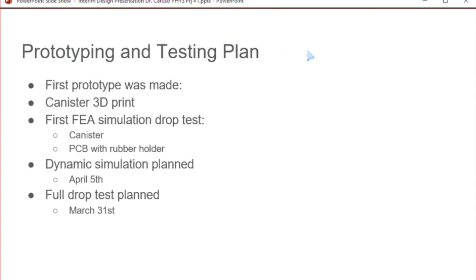Here is our prototyping and testing plan. Our first prototype was made with a 3D printer. We placed a 3D printed canister. And then next we're going to do some first FEA simulation drop test to the canister and the PCB with rubber holder. And then we're also going to have the dynamic simulation with Adams. That's going to be on April 5th. And then we're going to do the floor drop test on March 31st.